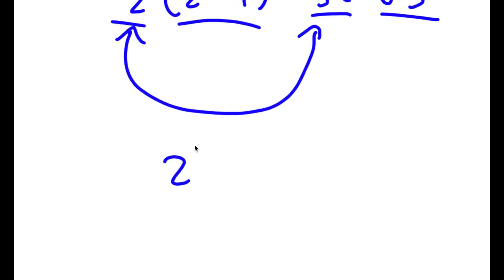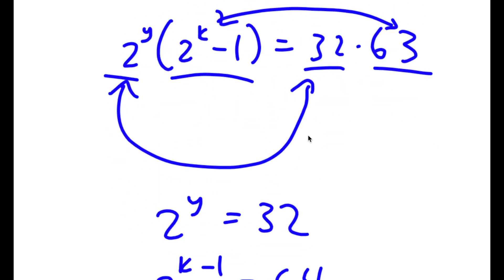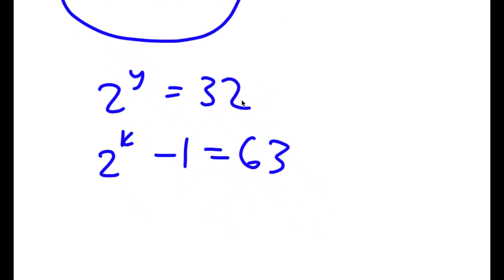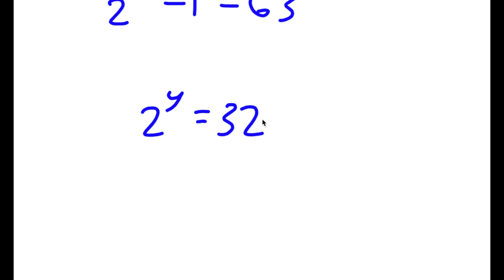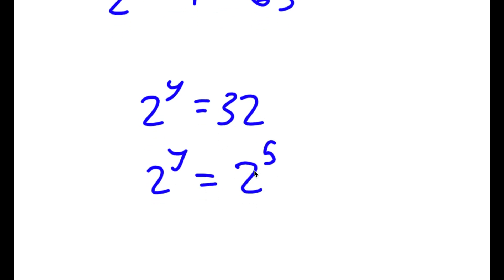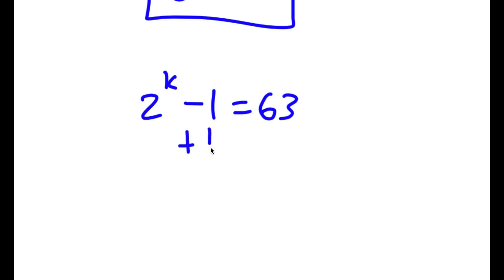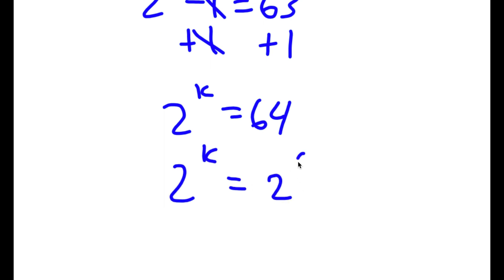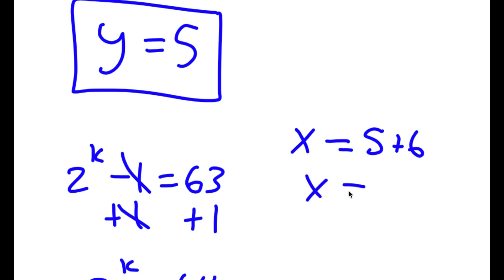So I have 2 to the power of y is equal to 32, and 2 to the power of k minus 1 is equal to 63. Since 32 is 2 to the power of 5, y is equal to 5. For 2 to the power of k minus 1 equals 63, I add 1 to both sides to get 2 to the power of k equals 64. Since 64 is 2 to the power of 6, k is equal to 6. Now, remember x is equal to y plus k, so x is equal to 5 plus 6, meaning x equals 11.